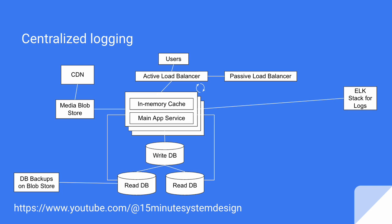In ELK, E stands for Elasticsearch, L for Logstash, and K for Kibana. Instead of writing logs to files, we write the logs to Logstash. From there, logs are indexed into Elasticsearch, and Kibana provides us search and visualization capability on those logs. With this setup, we are able to serve a significant number of users without going down, and we can identify issues from the ELK stack instead of SSHing into servers.